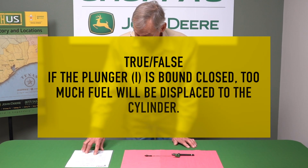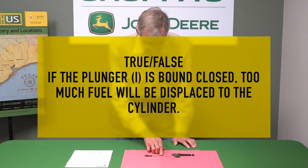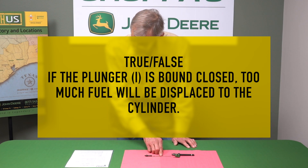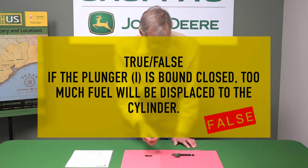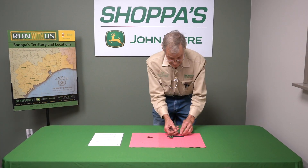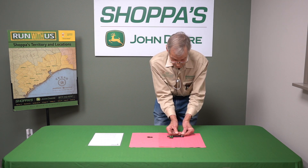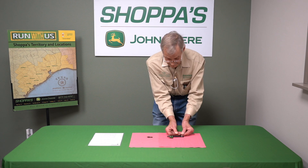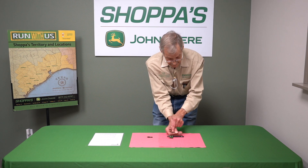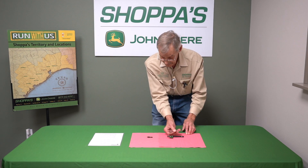Next statement: if plunger I — that's the plunger — is bound closed, too much fuel will be displaced to the cylinder. That also is false. If that plunger is stuck all the way down to the little orifices, then there will be no fuel discharged.